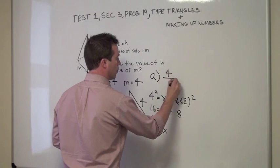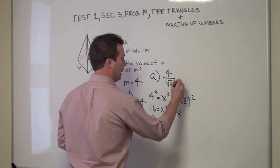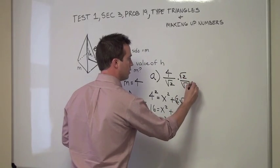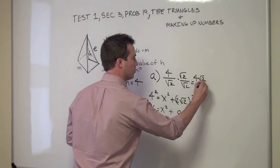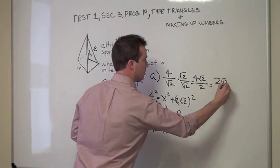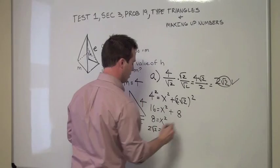and you put in 4 over the square root of 2, and then rationalize it, you will get 4 root 2 over 2, which is 2 root 2, and that checks out. That's what we're looking for.